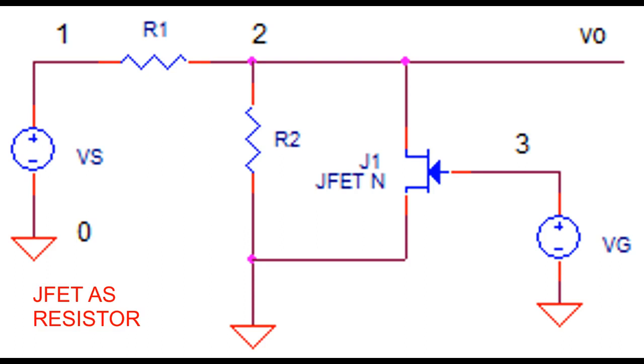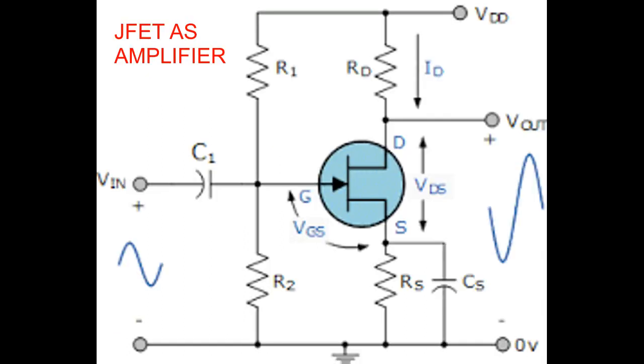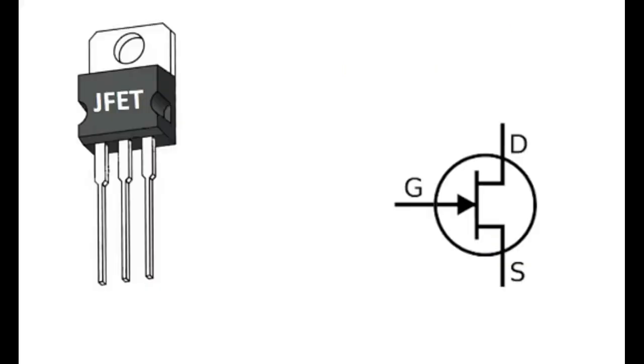Here you can see the shape of JFET and symbol. The JFET transistor has three terminals: gate, drain and source. They are denoted by the abbreviations G, D and S.